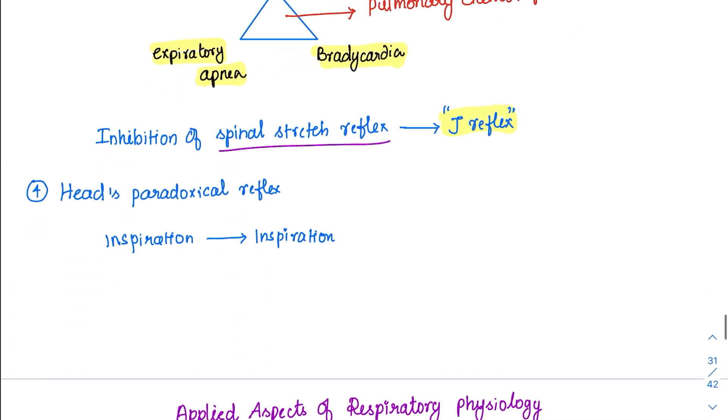Now coming to the last reflex which is called Head's Paradoxical Reflex. It is a paradox. Head is the name of the scientist, not because of the head region in the body. It is a paradox. What happens is usually whenever there is too much of inspiration, we don't want too much inspiration. We want to stop it and cause an expiration. But what happens in this reflex is inspiration is causing inspiration.